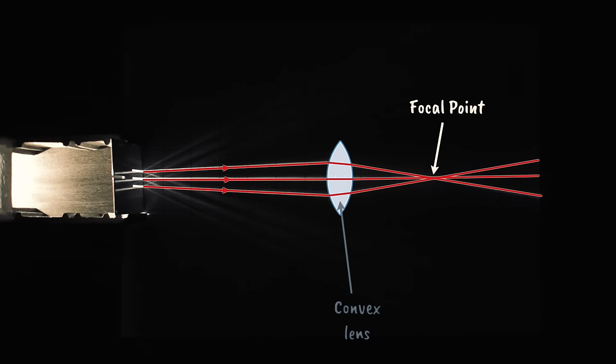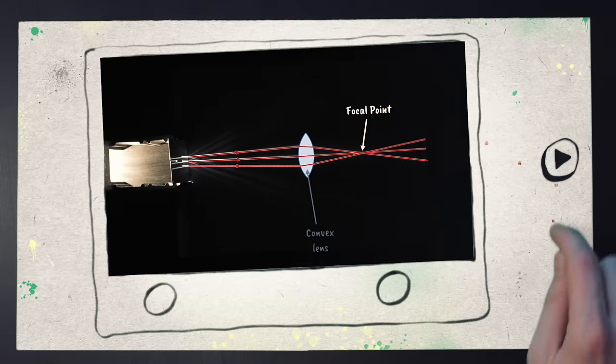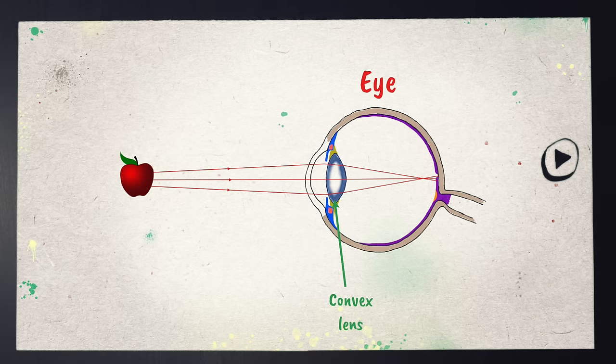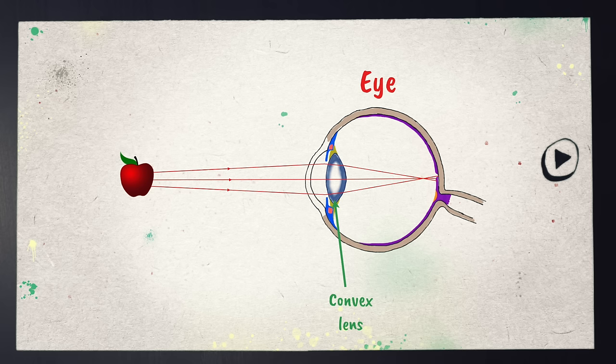This is called a convex lens, sometimes known as a converging lens, because the light rays converge as a result of going through the lens. It's this type of lens that we have in our eyes that allow us to focus light from objects onto our retina, so we can see a clear image.